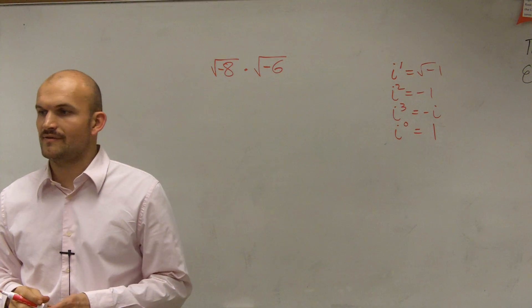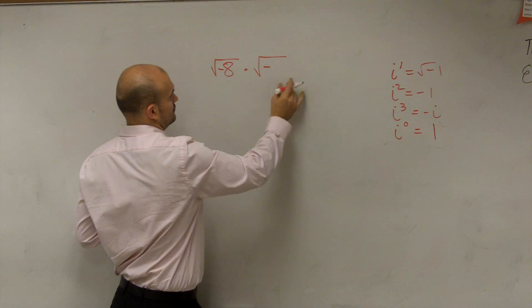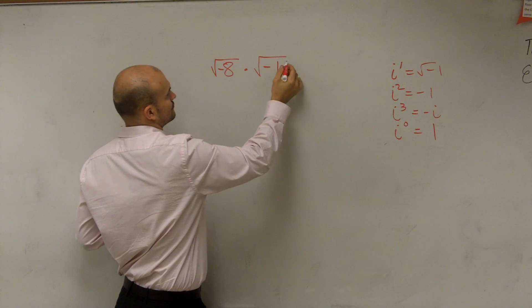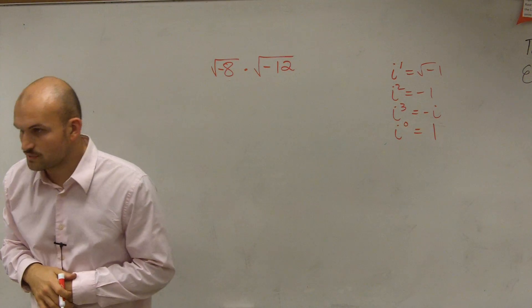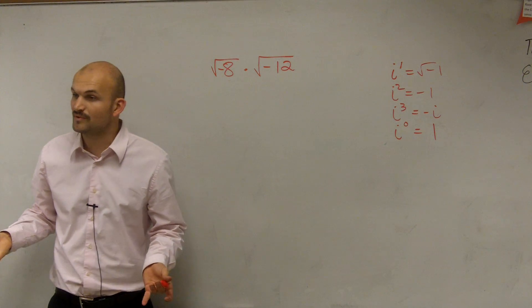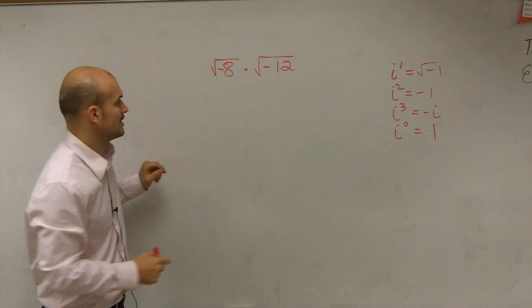If you have square root of negative 8, let's pick something good. If you're going to do square root of negative 8 times square root of negative 12, the first thing you do is you have to simplify each one of them. I'm not going to go through this step by step because I already did that, so I'm just going to go a little bit quicker.